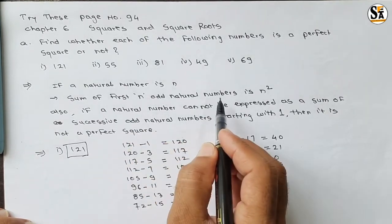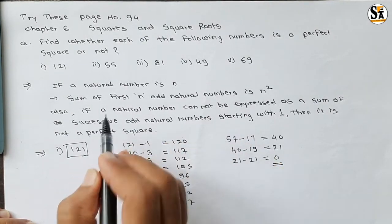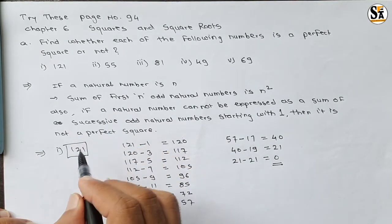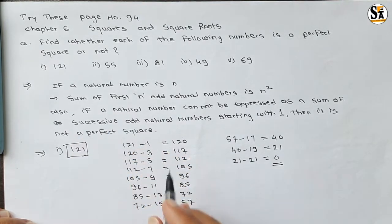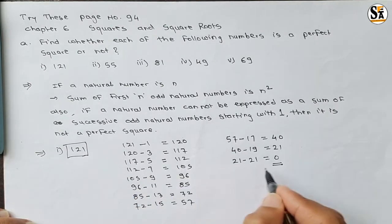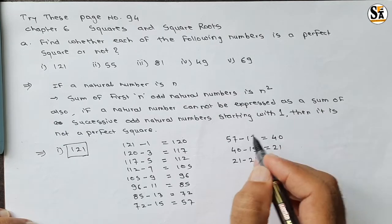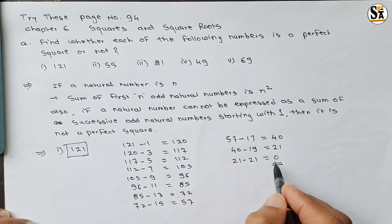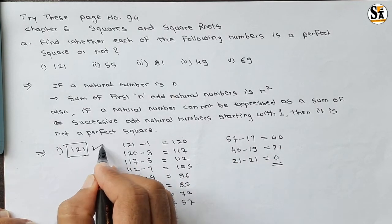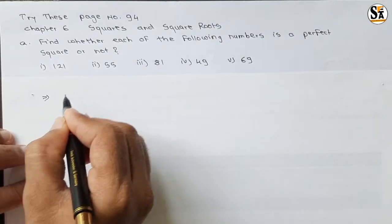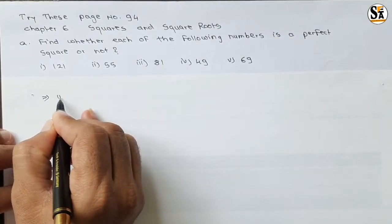Because we are subtracting — meaning we are taking the sum of all these odd numbers starting with 1 — and we are getting answer 0, this confirms that 121 is a perfect square number. Now see the next number: 55.